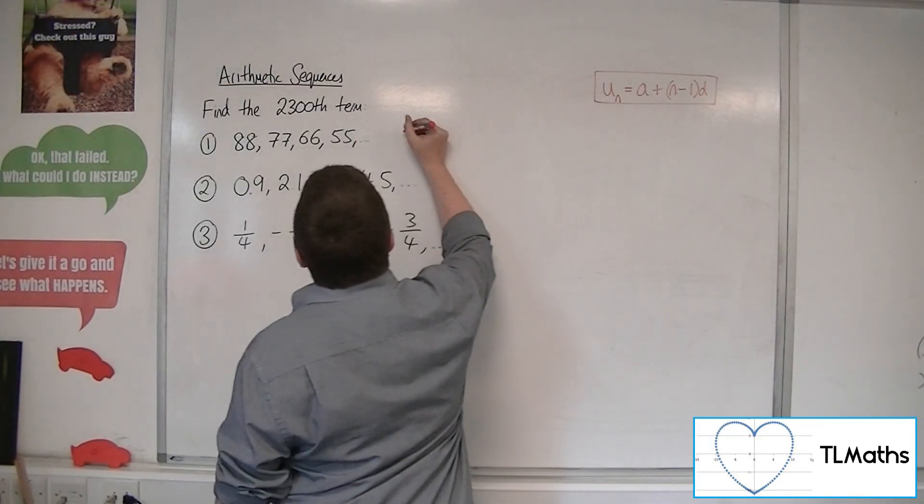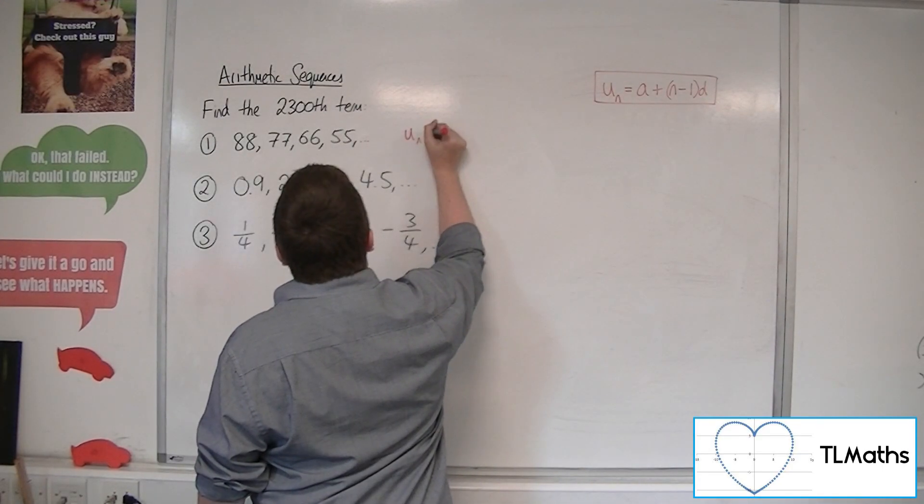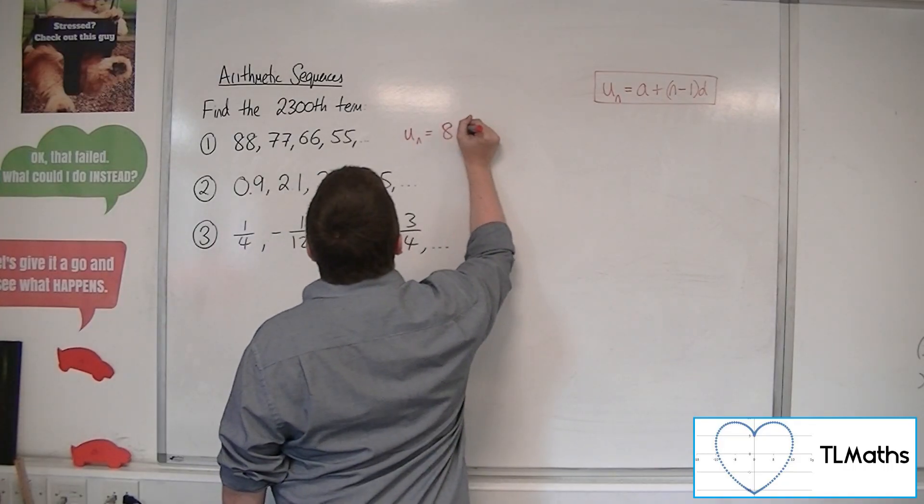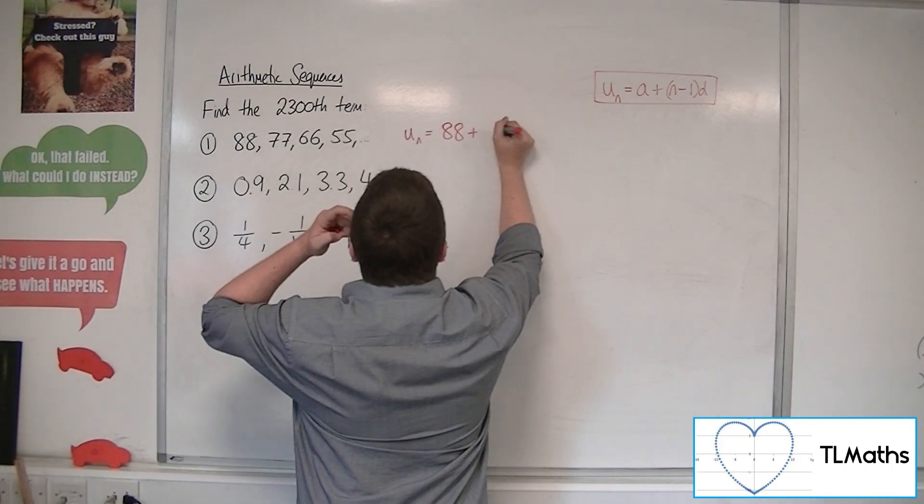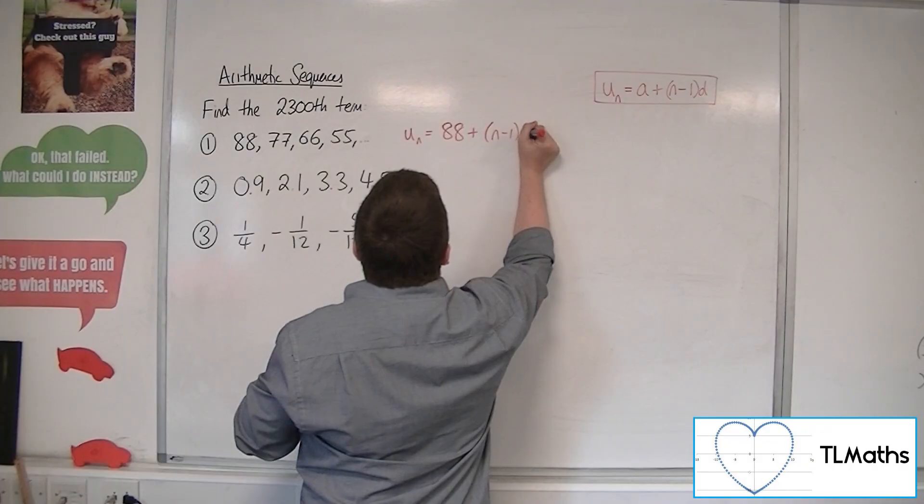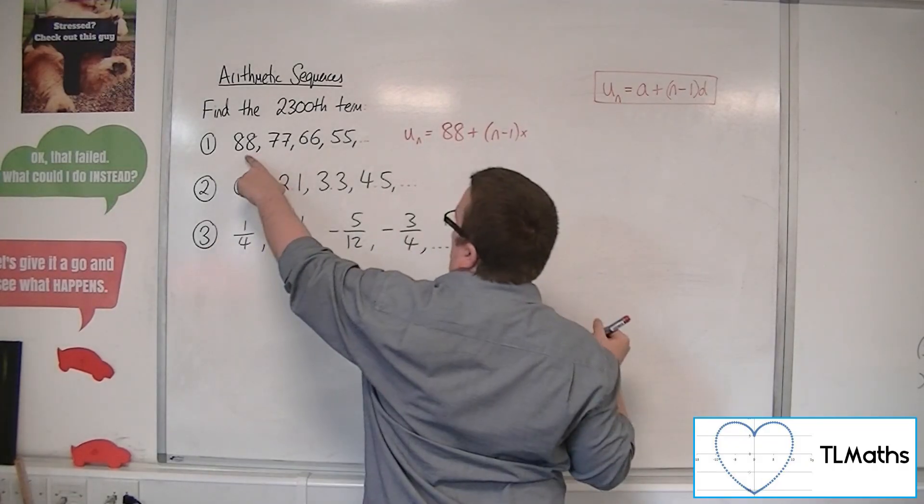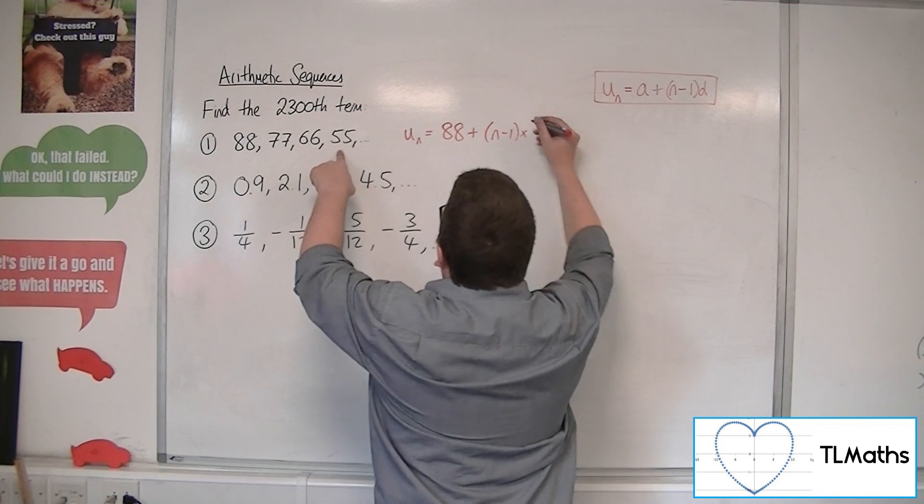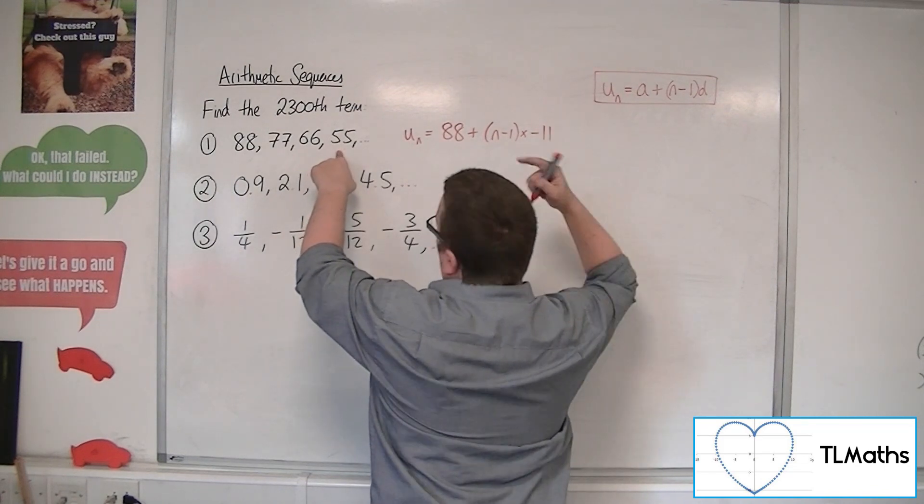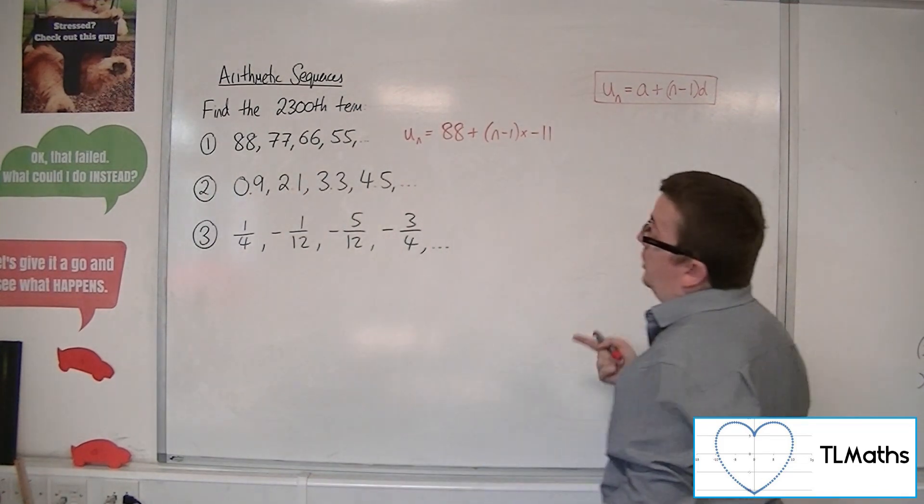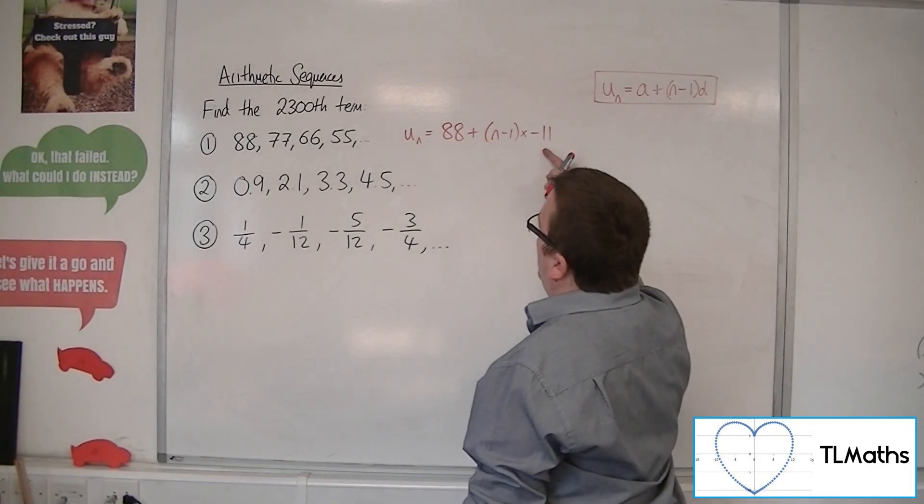So for number one, we've got un is equal to the first term a, so 88, plus n minus 1 times by d, the common difference. Now we can see that these are going down by minus 11, or adding on minus 11 each time. So this will be my nth term.